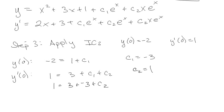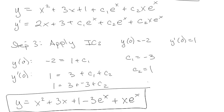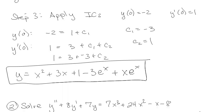And finally I can pull my full solution, which is that y equals x² + 3x + 1 + c1, which is minus 3e^x, and then plus c2, which is 1, x e^x. And I've got a lovely, beautiful full solution to my constant coefficient, linear, second order ordinary differential equation. Fantastic. Alright, so we'll look at this one.